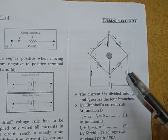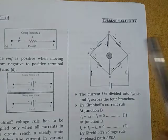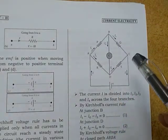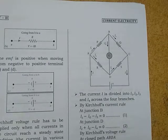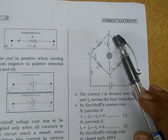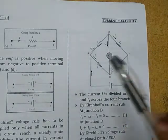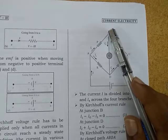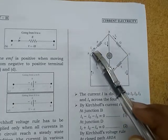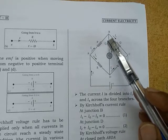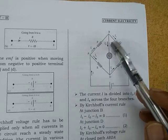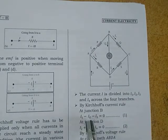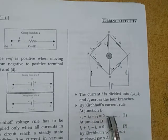Applying Kirchhoff's Current Rule at junction B: the algebraic sum of currents meeting at a junction is zero. Current entering is positive, current leaving is negative. I₁ enters junction B; Iɢ and I₃ leave. So we write: I₁ − Iɢ − I₃ = 0.